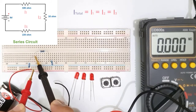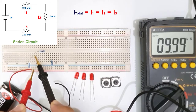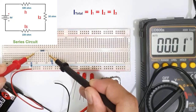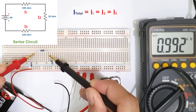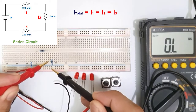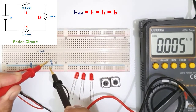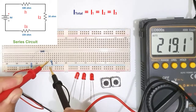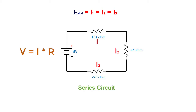The third principle is that the amount of current that flows in a series circuit is the same through any component. Technically, even if you don't have a multimeter, you can easily compute the voltage, current, and resistance of any given circuit using Ohm's law: V is equal to IR, where V is voltage in volts, I is current in amperes, and R is resistance in ohms. As long as you know the values of two of the three components, you can compute for the value of the third.